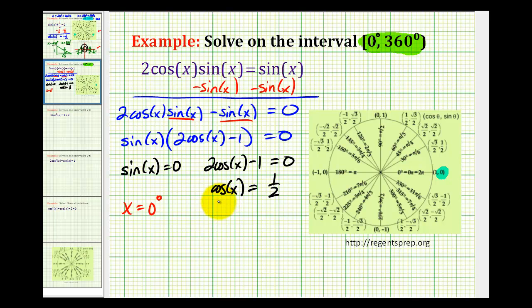And now we need to determine where the cosine function is equal to one-half on this interval. And on the unit circle, cosine theta is equal to x. So now we'll look for x-coordinates that are equal to positive one-half.